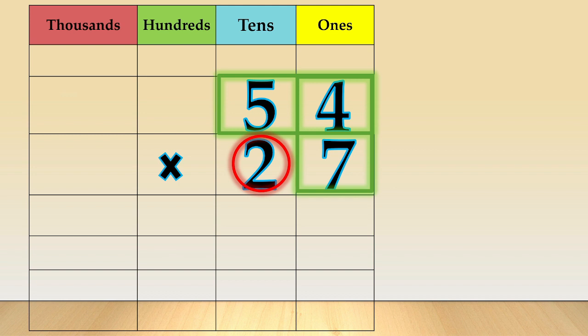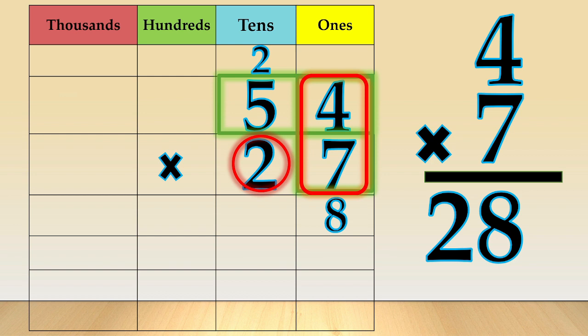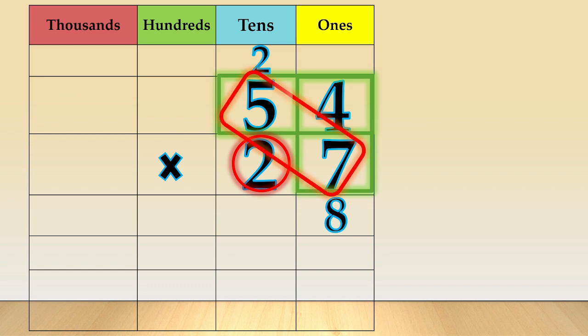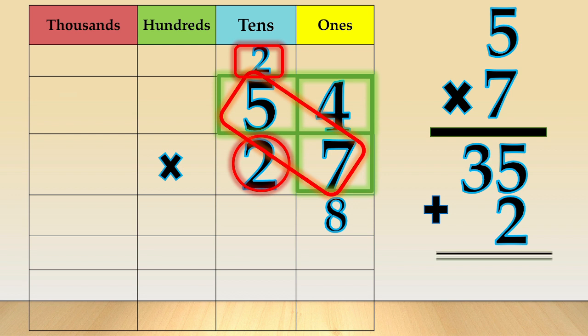So, 4 times 7 is equal to 28. We write 8 in the ones column. Now, we carry 2 to the tens place. Next, we do 5 times 7 is equal to 35. Add the 2 tens that you have carried over. So, 35 plus 2 is equal to 37. We write 7 in the tens column and 3 in the hundreds column.